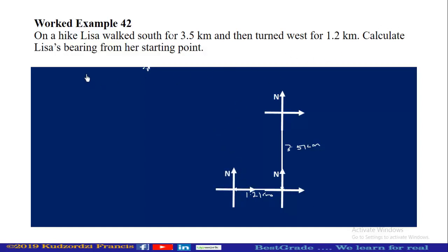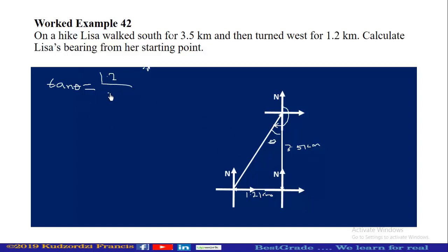We are asked to calculate Lisa's bearing from her starting point. We measure until we meet the direction line between them — this is the bearing from her starting point. We need to find this angle and add to 180. Let this angle be theta. By trigonometry, tan θ = opposite / adjacent = 1.2 / 3.5.